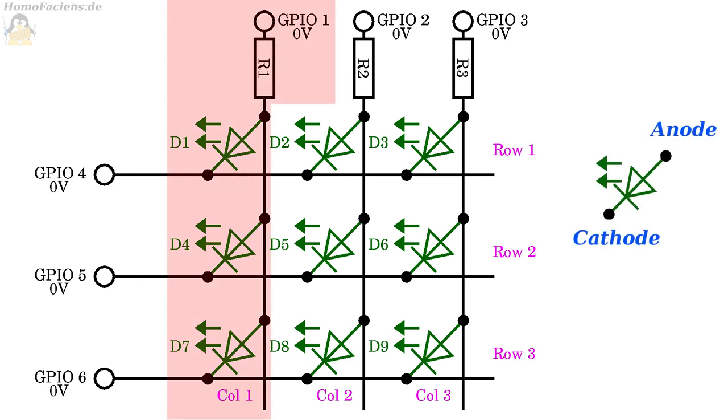The LEDs 1, 4, and 7 are connected on the anode side directly to one another and to GPIO 1 via a resistor. Same applies to LEDs 2, 5, 8 and GPIO 2, as well as the LEDs 3, 6, 9 and GPIO 3.